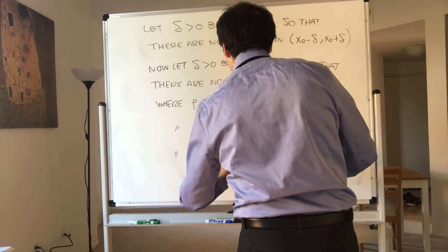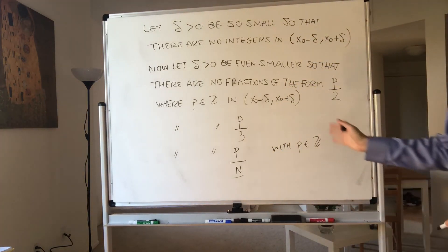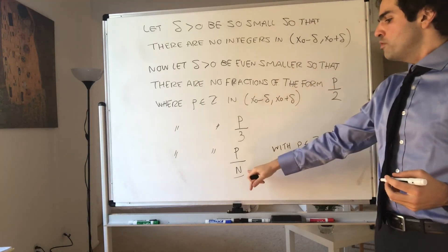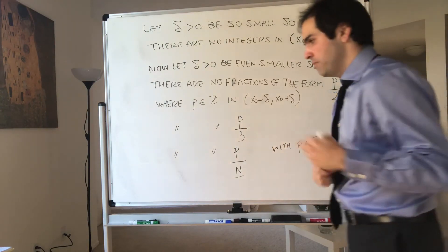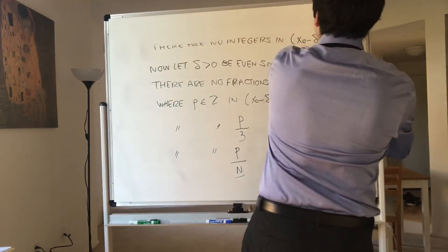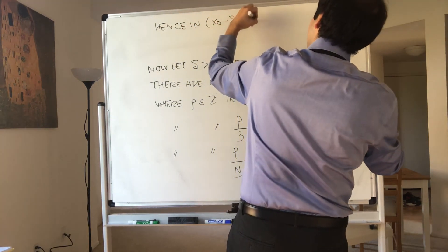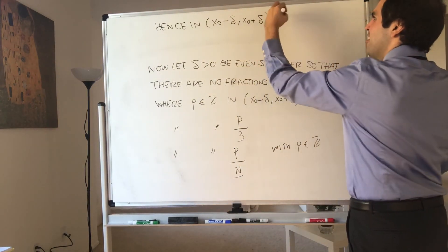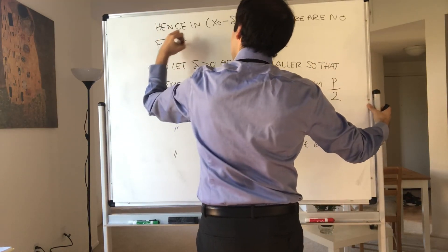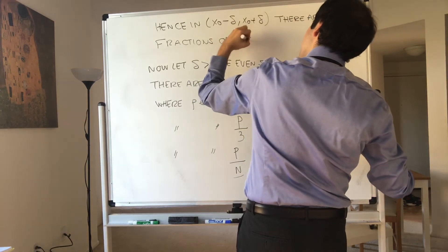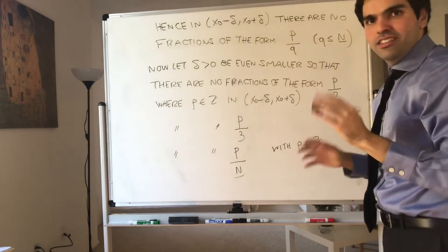So the point is, in that interval there are no integers, no half integers, up to no fractions of the form p over N. Hence in the interval (x-naught minus delta, x-naught plus delta), there are no fractions of the form p over q where q is less than or equal to capital N, at least in reduced form.